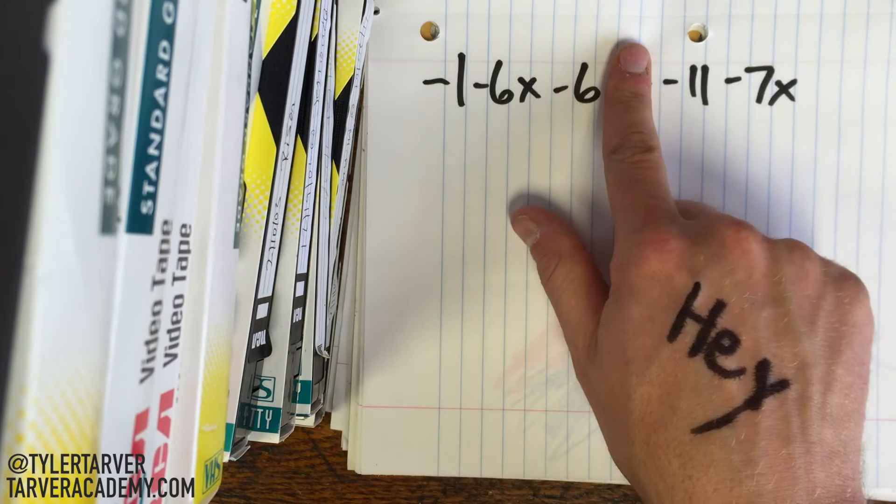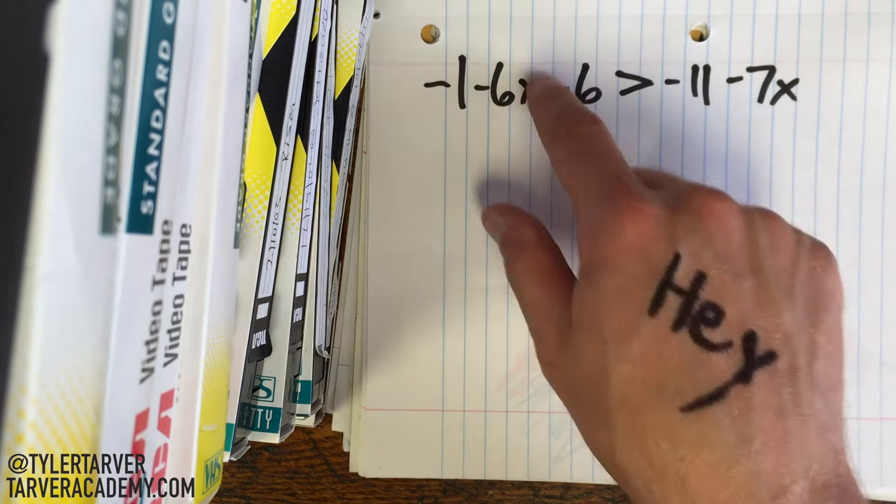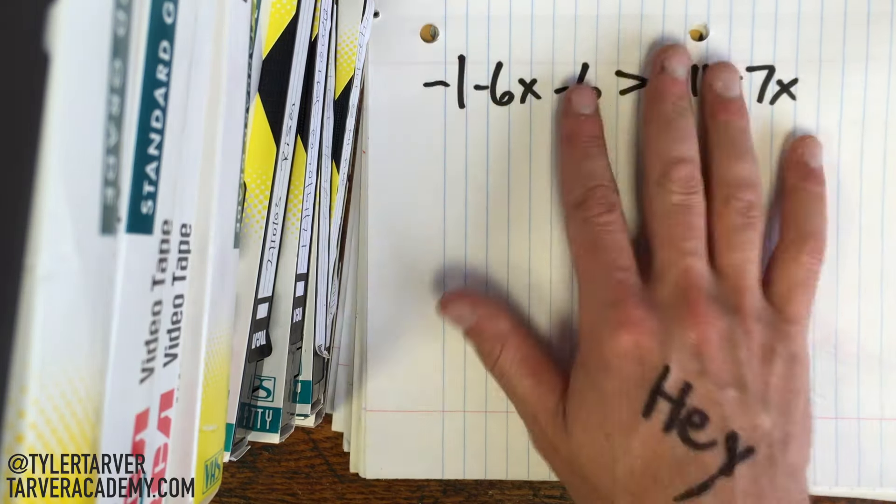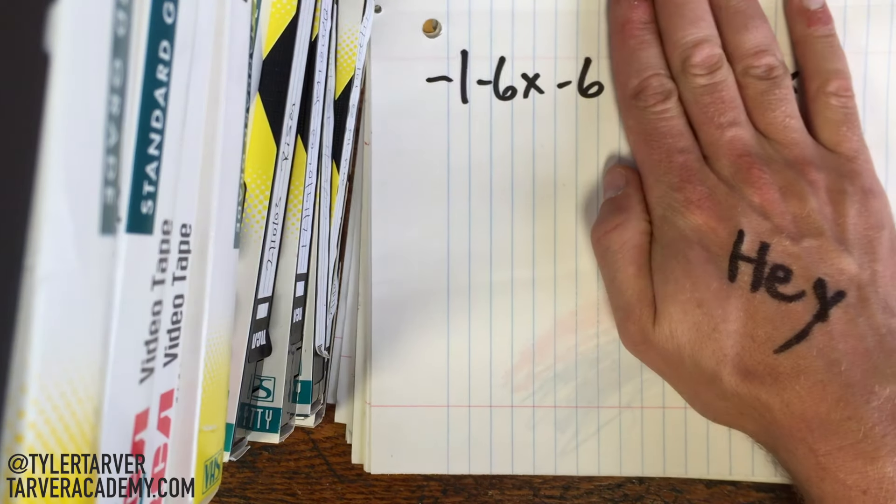First thing is, when it's inequality, you're going to work it just like it's an equal sign unless we have to divide or multiply a negative across the sign. Other than that, it's a regular equation. Okay, so just like a regular equation, we look at one side first and simplify.